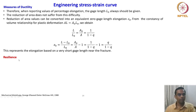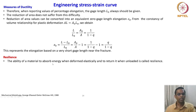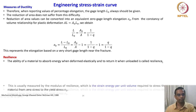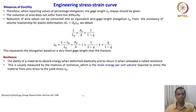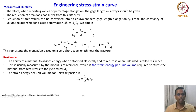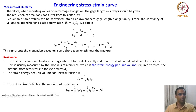Another fundamental property assessable by simple tensile test is resilience. Resilience is the ability of a material to absorb energy when deformed elastically and to return it when unloaded. It is measured by the modulus of resilience, which is the strain energy per unit volume required to stress the material from zero stress to the yield stress sigma_naught. The strain energy per unit volume for uniaxial tension is U_naught = (1/2) sigma_x times epsilon_x, and the modulus of resilience U_r = (1/2) S_naught times epsilon_naught = S_naught² divided by 2E.